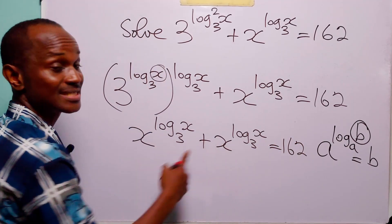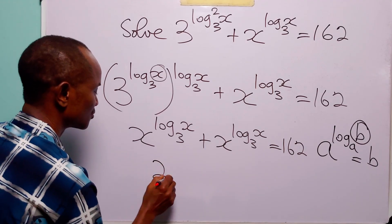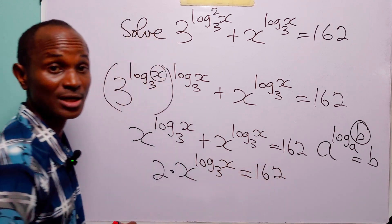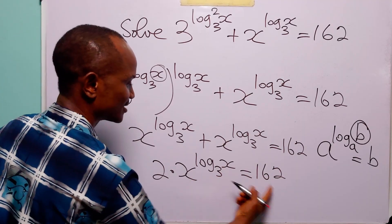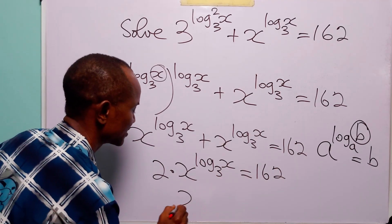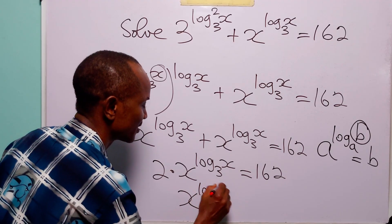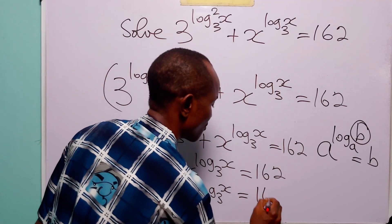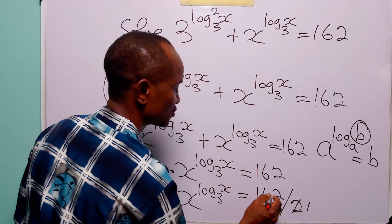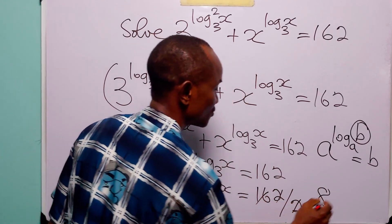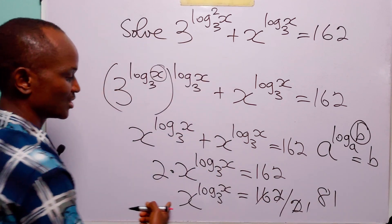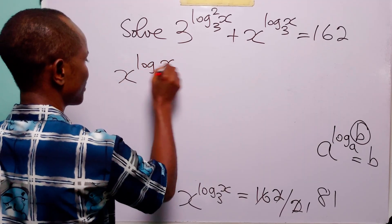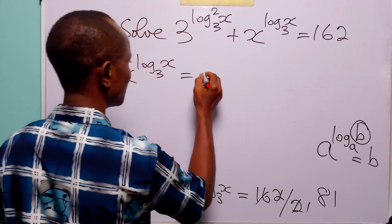Now we have two of the same thing, so this is simply 2 times x to the power log to base 3 of x, equal to 162. Dividing both sides by 2 gives 81, so x to the power log to base 3 of x is equal to 81.